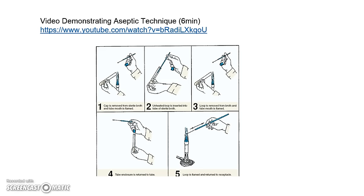Step one shows that you've opened the lid and you're holding it still. Now you're running the mouth of the tube through the flame. Step two, you're using the inoculation loop to get some sample. Step three, you're reflaming the loop before you put the cap back on. That ensures no bacteria is on the outside of the lid for future use — so when you put it in the fridge, the bacteria can't crawl off and get in there. When you're done, sterilize your loop to make sure all the bacteria is dead.